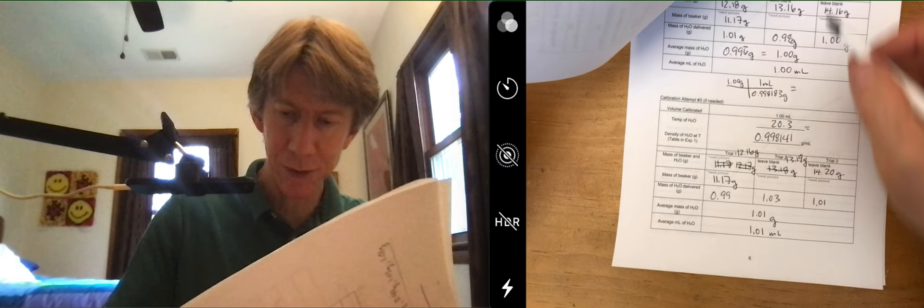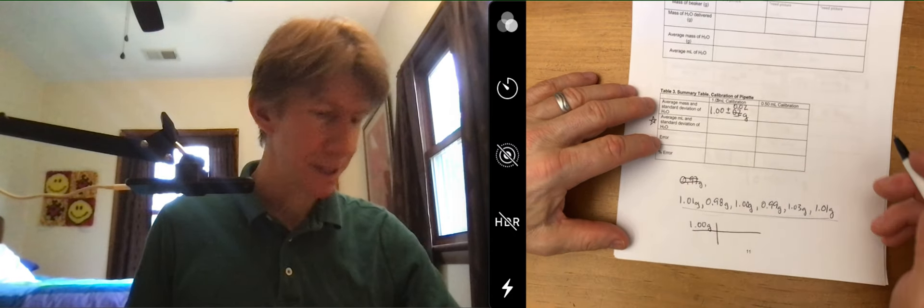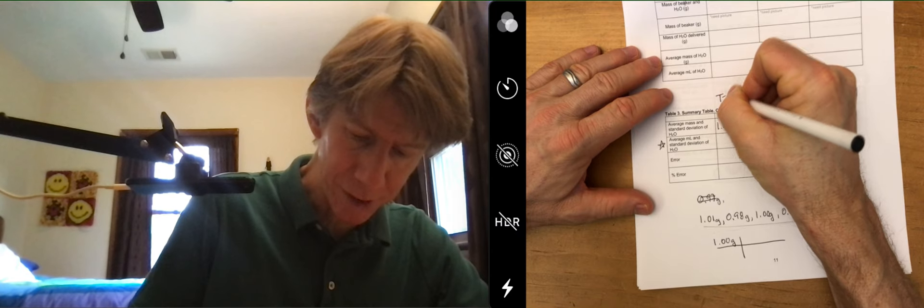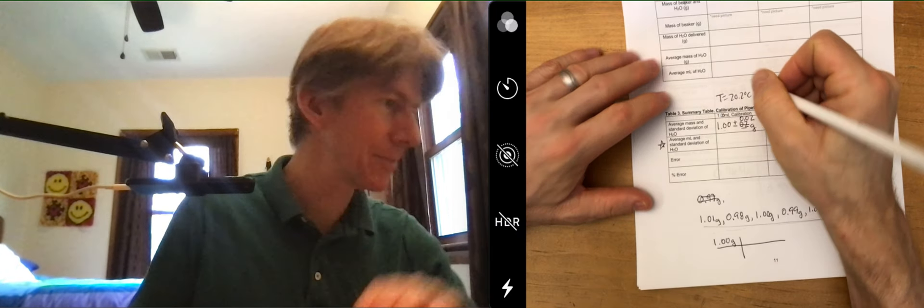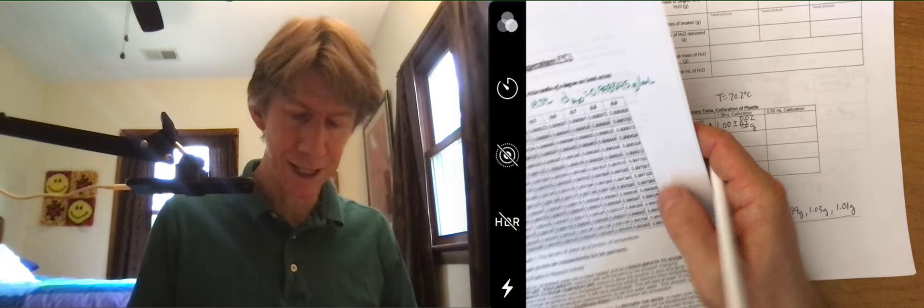So I actually have 20.3, 20.1, oh so 20.2 is my average temperature. So T equals 20.2 degrees Celsius and at my table 20.2 is 0.998365 grams per milliliter.